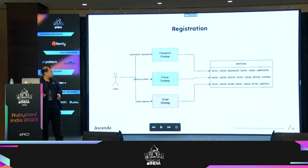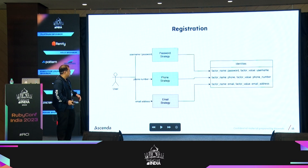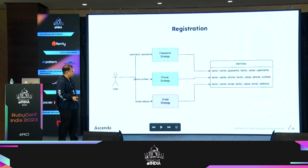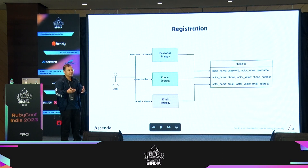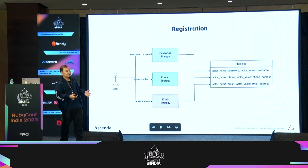The second benefit is discoverability. When a user comes in, they only need to choose a factor — login using password, email, or phone number — and from there you can trigger a separate strategy for each factor. For registration, they can choose email and you go to the email strategy, creating an identity with factor name 'email' and factor value as the actual email input. For phone, you can send an SMS to verify ownership. For username and password, you can have two fields — password and password confirmation — giving you different UX for all those strategies.